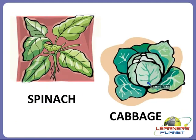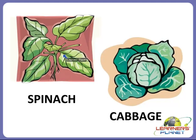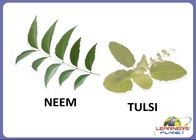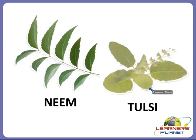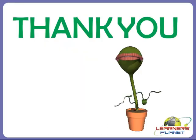Some plants such as mint, spinach, and cabbage have leaves that can be eaten as food. Such plants have leaves that can be directly eaten as food. Then some leaves have medicinal value also — like neem and tulsi. Neem and tulsi are plants whose leaves have medicinal uses. We can use them as medicine because they can cure our disease.